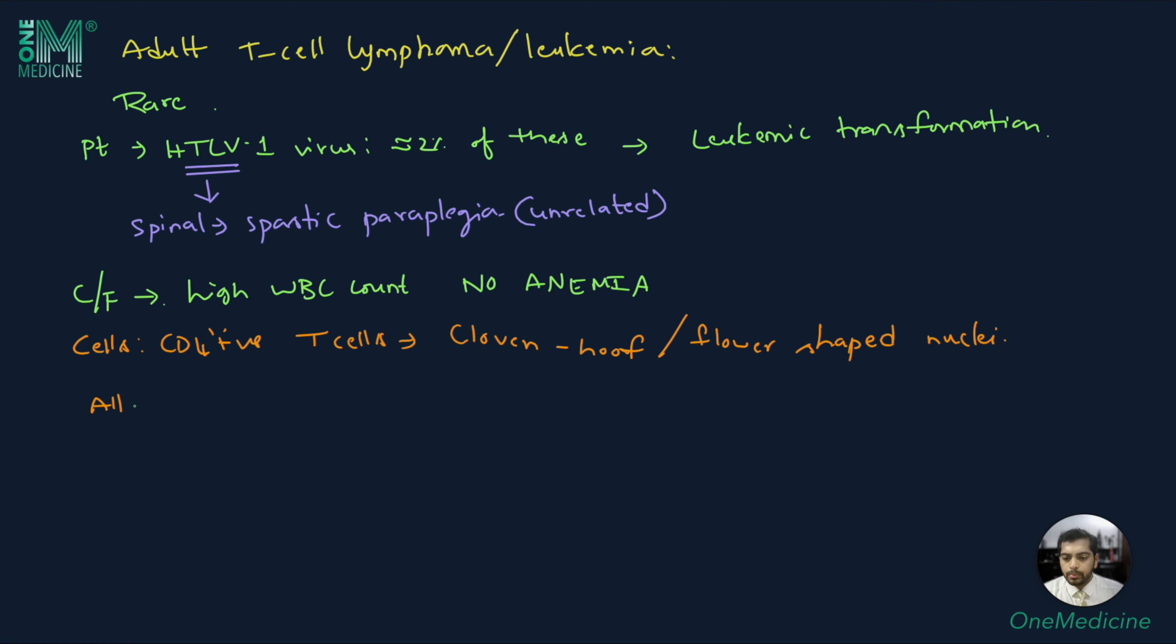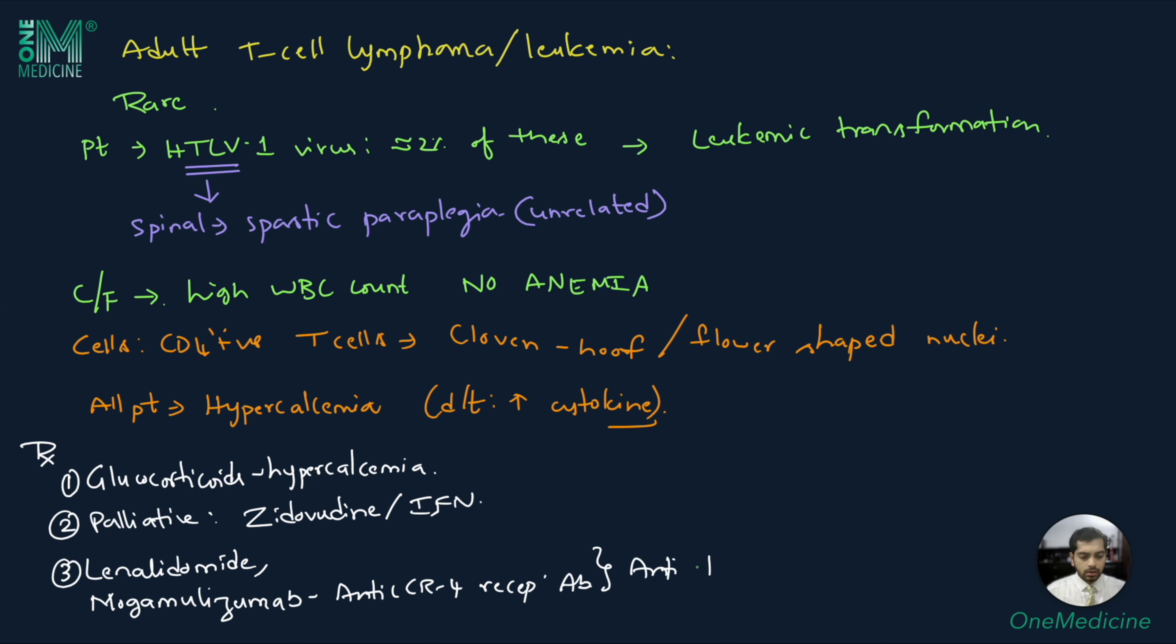Almost all patients develop hypercalcemia due to increased cytokine production by the tumor cells. Treatment for adult T cell leukemia includes glucocorticoids for hypercalcemia. A palliative route involves treatment with zidovudine or interferon. Other options include lenalidomide and mogamulizumab, which is an anti-CCR4 receptor antibody. Both of these are found to have anti-tumor activity.